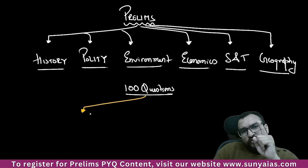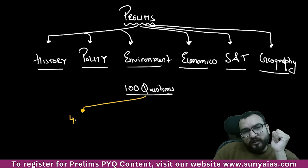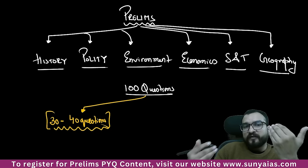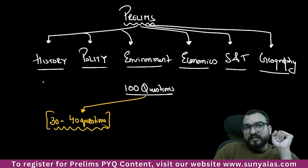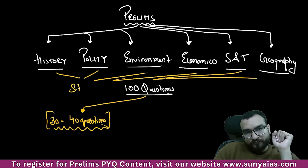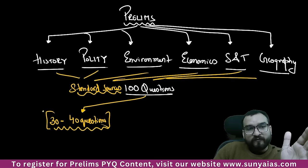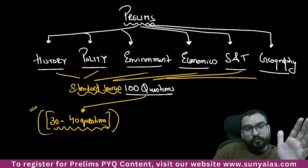Out of those 100 questions, every year you will find that you are only sure or half-sure about only 30 to 40 questions. As the prelims is getting trickier year after year, this ratio — where you know the question, where you have heard about those particular topics — is only 30 to 40 questions. These 30 to 40 questions are coming from your standard sources of these six subjects. The time you take in one year by reading the standard subjects is reflected in these 30 to 40 questions.